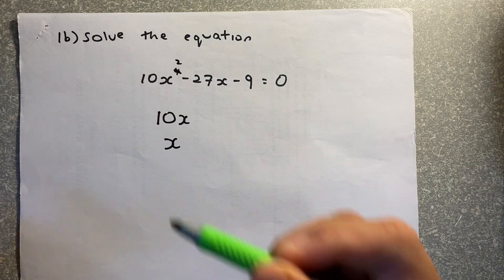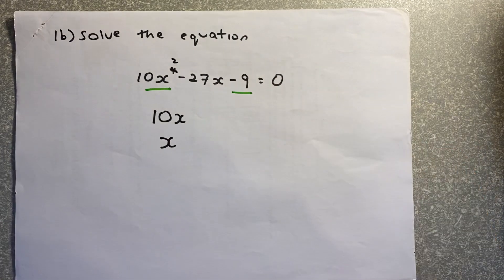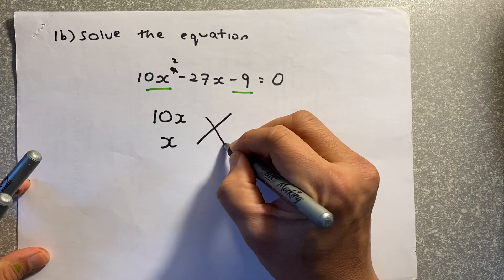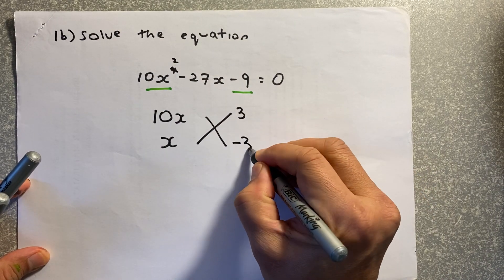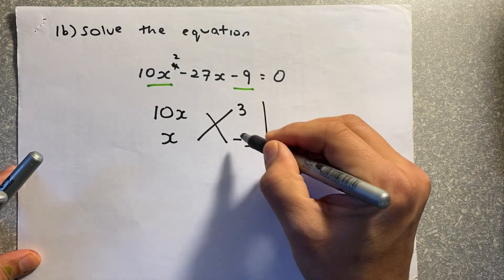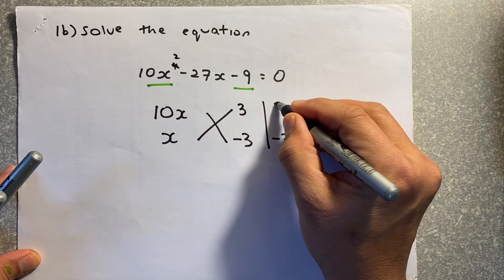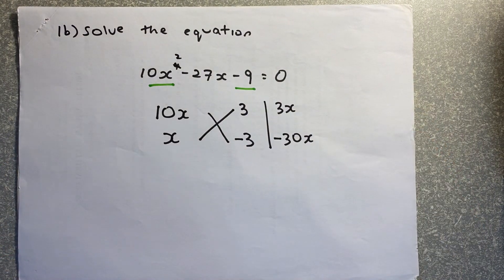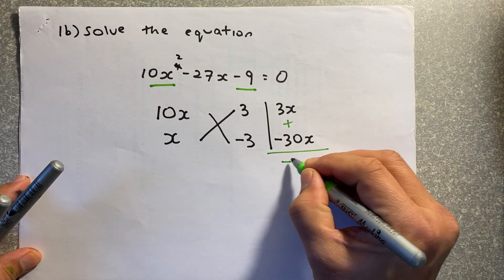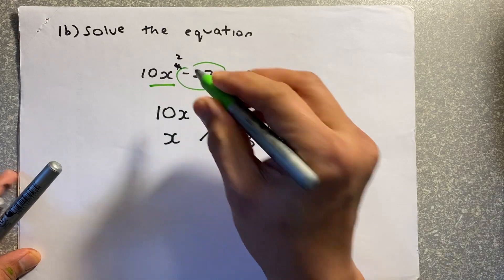We factorize 10x squared into 10x and x, then factorize minus 9 into two factors that multiply to give 9. Using trial and error: if one factor is 3 and the other is negative 3, then 10x times minus 3 is minus 30x, and x times 3 is 3x. Adding them gives minus 27x, which matches.